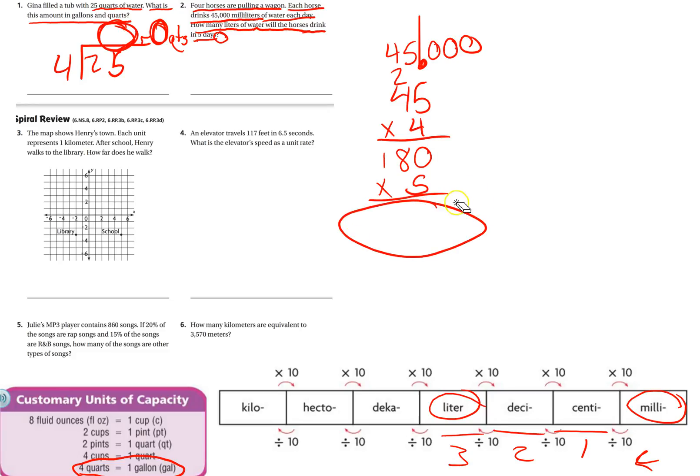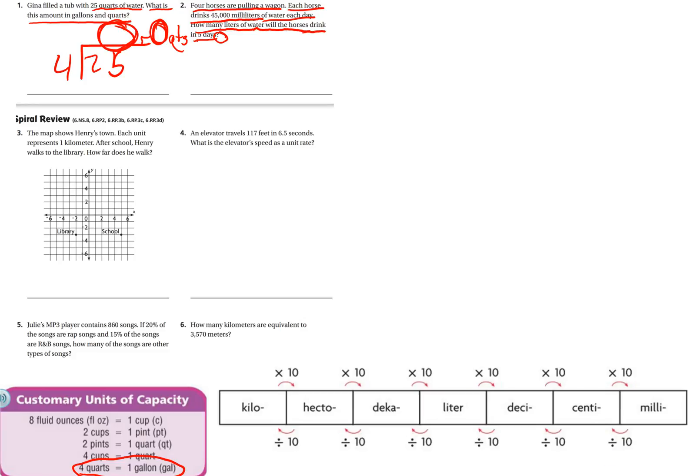I'll let you go ahead and do that math on your own. Don't erase your work. All right, the map shows Henry's town. Each unit represents one kilometer. After school, Henry walks to the library. How far does he have to walk? So he walks after school from the school to the library. Each one of these blocks is a kilometer, so that's one, two, three, four, five, six, seven kilometers.